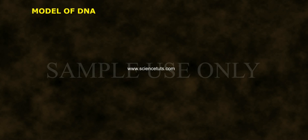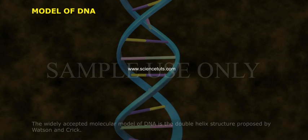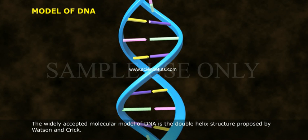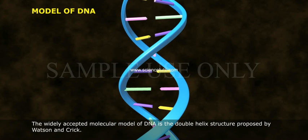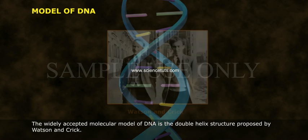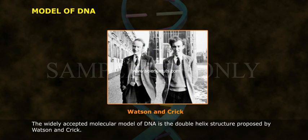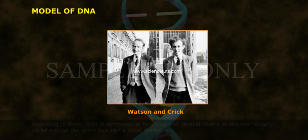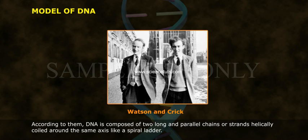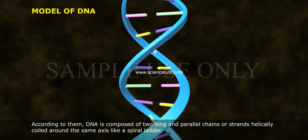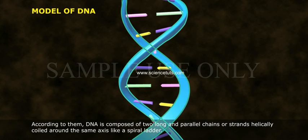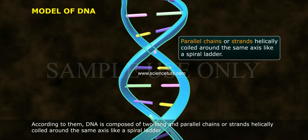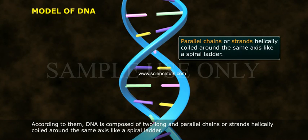The widely accepted molecular model of DNA is a double helix structure proposed by Watson and Crick. According to them, DNA is composed of two long and parallel chains or strands helically coiled around the same axis, like a spiral ladder.